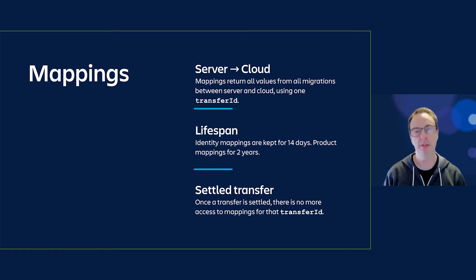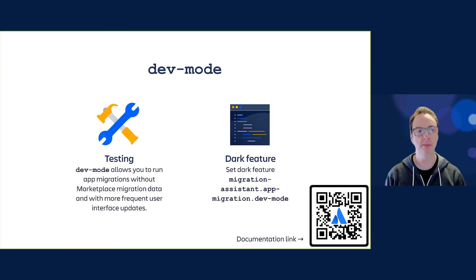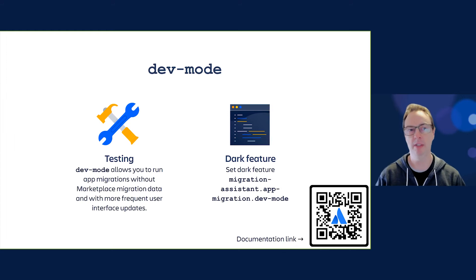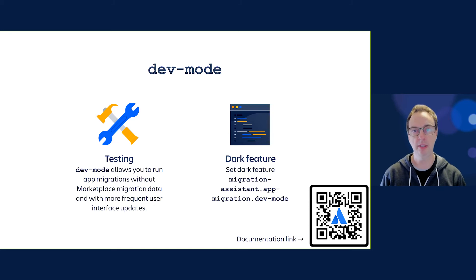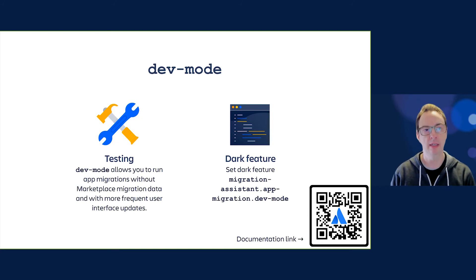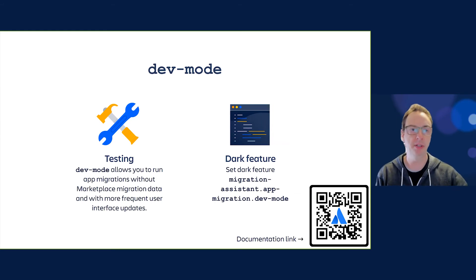When you're on server and developing your code, you can run your app migration in dev mode. It allows you to run app migrations without Marketplace migration data, with more frequent user interface updates — every 60 seconds instead of every 10 minutes. You set this with the dark feature flag. It's really useful in testing if you have your getServerAppKey and getCloudAppKey configured correctly, as you can do testing without actually having a production cloud app or production migration code.